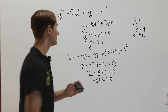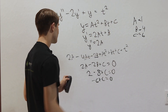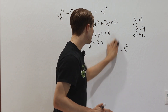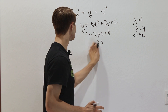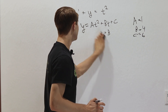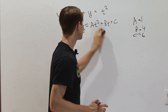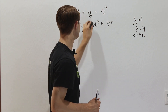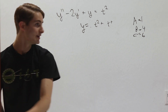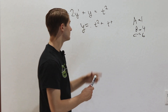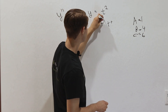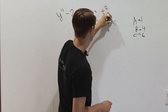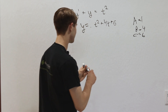We have figured out all the constants, so we can plug them back into our solution y. Our final answer is y equals t squared plus 4t plus 6.